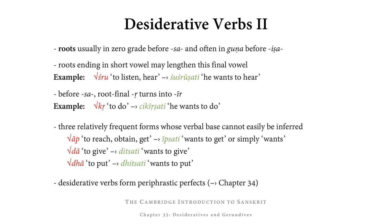Then there are a number of small formal irregularities. First of all, roots ending in a short vowel may lengthen this root-final vowel in the desiderative. So, for example, from śru (to listen, to hear), we get śuśrūṣati — he wants to hear. Before sa, root-final r (vocalic r) turns into ir. So from kṛ (to do), we get cikīrṣati — he wants to do.